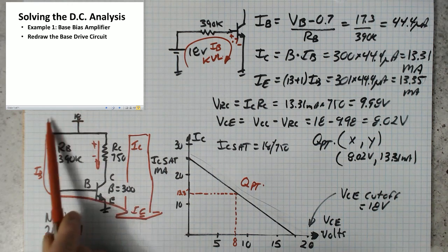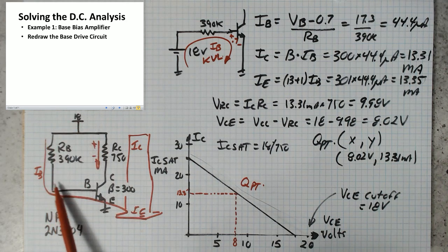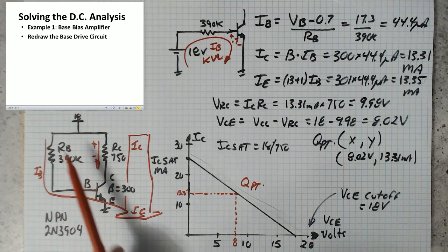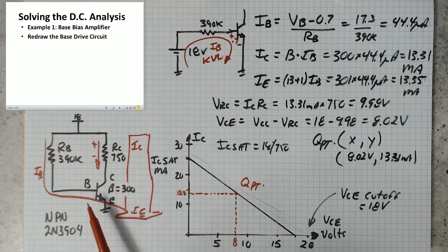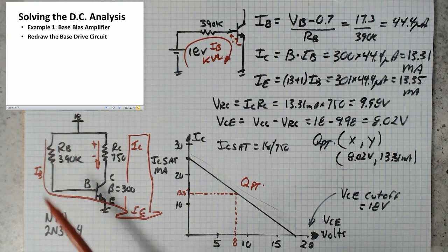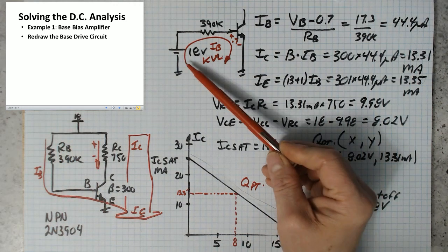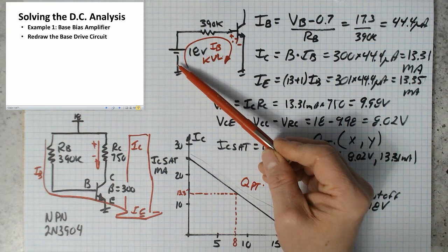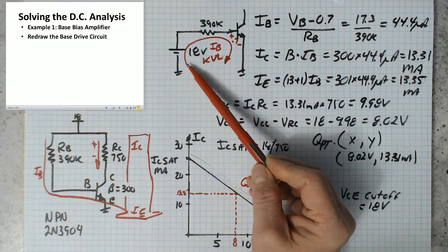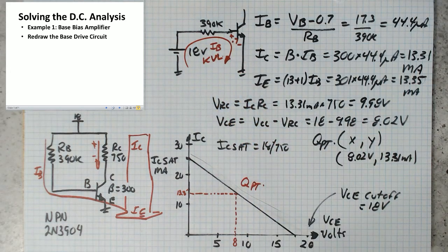So over here, the power supply is drawn as a single source, which powers the base drive, which determines how much current goes into the base, and also passes current down through the collector. So what we want to do is we want to detach these into two separate supplies, and we want to redraw the 18 volt source and the 390k ohm resistor so that we can see that it injects current into the base.